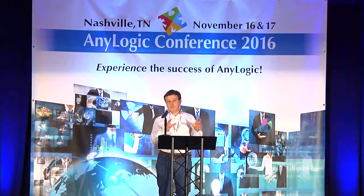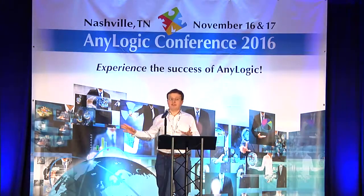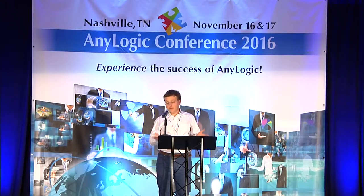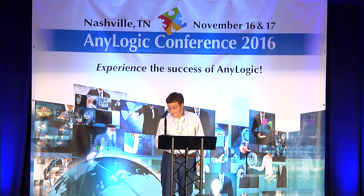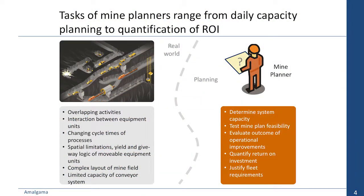Ore passes themselves can also sometimes be overflowed and everything is stopped — if the train below is late, for example, the ore pass gets overflowed and everything stops. The conveyor system is probably the best example of interdependencies, because conveyor belts collect ore from throughout the mine and take it to the hoist. Once conveyors or bunkers get filled at one part of the system, this constraint can be propagated throughout the mine and stop work thousands of meters away. There are a lot of overlapping activities, interactions between equipment units, changing cycle times, and other complexities in underground mines.